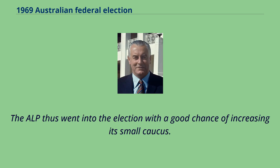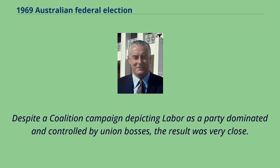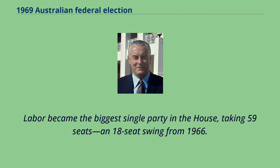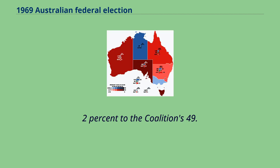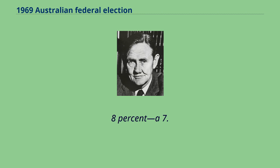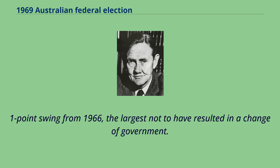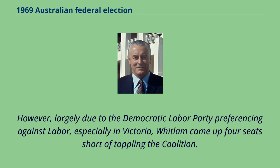The ALP thus went into the election with a good chance of increasing its small caucus. Despite a coalition campaign depicting Labour as a party dominated and controlled by union bosses, the result was very close. Labour became the biggest single party in the House, taking 59 seats — an 18-seat swing from 1966. It also won a bare majority of the two-party preferred vote, winning 50.2% to the coalition's 49.8%, a 7.1-point swing from 1966 and the largest not to have resulted in a change of government. However, largely due to the Democratic Labour Party preferencing against Labour, especially in Victoria, Whitlam came up four seats short of toppling the coalition.